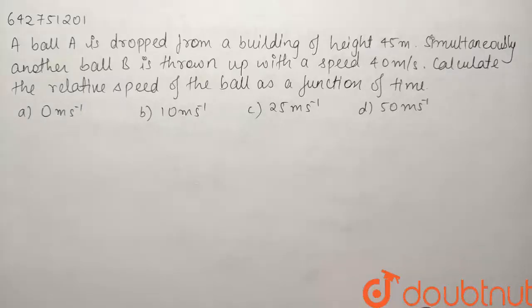So here we have a question from the chapter kinematics. A ball A is dropped from a building of height 45 meters. Simultaneously another ball B is thrown up with a speed of 40 meter per second. Calculate the relative speed of the ball as a function of time.